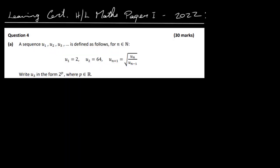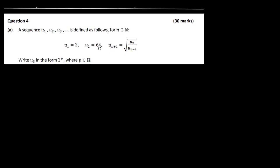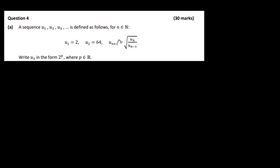Let's have a look at the Leaving Cert Higher Level Maths Paper 1 for 2022, question 4. We have a sequence u1, u2, u3 and so on, defined for natural numbers. u1 is 2, u2 is 64. The general formula is: u_(n+1) is equal to the square root of the previous term divided by the term before that.